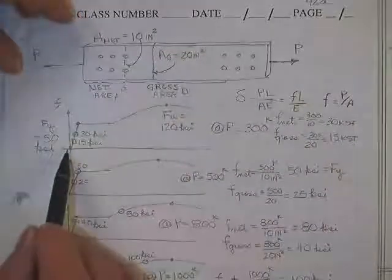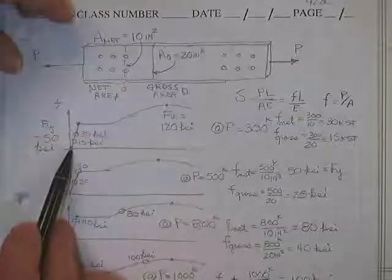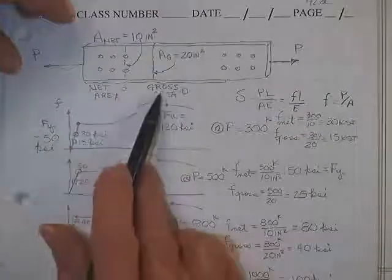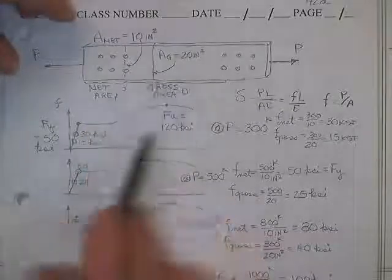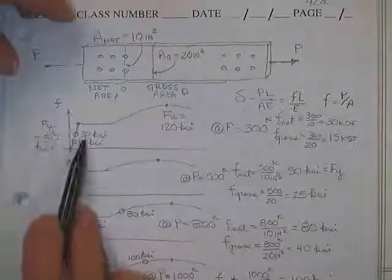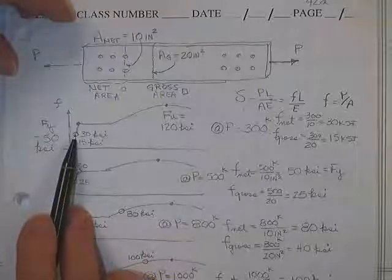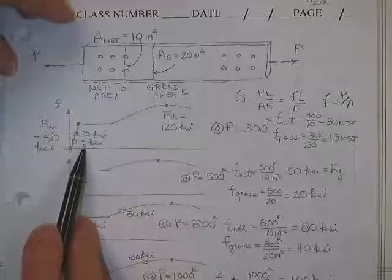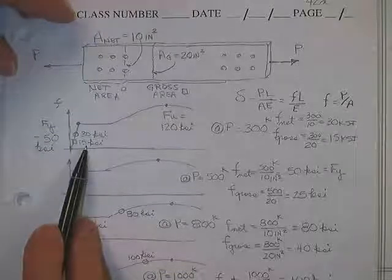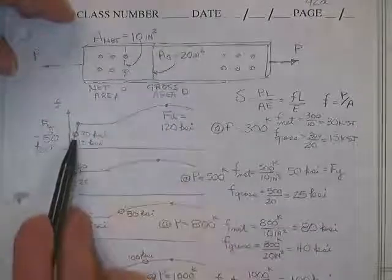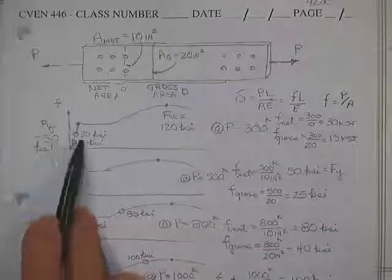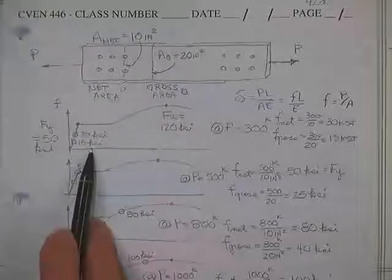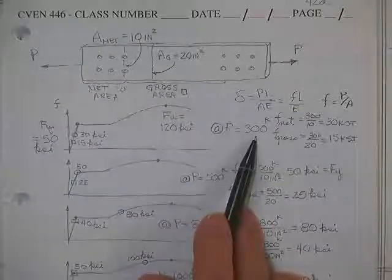Here is a 50 kip load placed on this item. The cross sectional area is shown at this time. The net area's got little circles because it got holes. The gross area is rectangles. The stress is 30 ksi at the holes because there's less area. And the stress in the main plate in the gross area is 15 ksi. Same load, half the area.